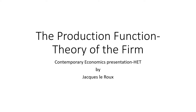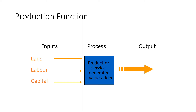Good day. Today's talk is about the production function and the theory of the firm for the contemporary economics presentation for the history of economic thought. The production function is something that is enabled by capitalists or entrepreneurs by using inputs available to them, processing the inputs in order to reach economic output.